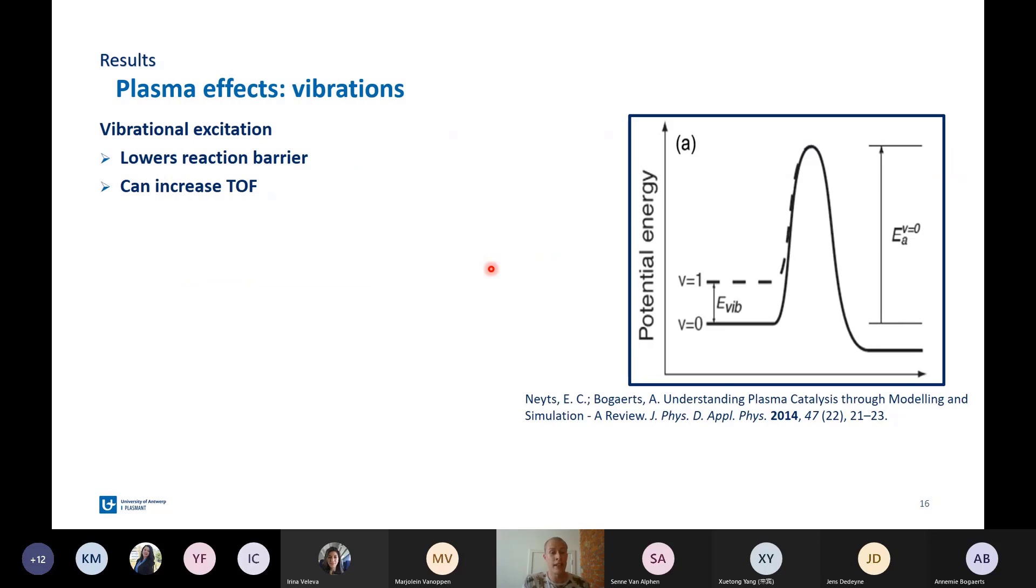Next, we looked at the effect of vibrationally excited species. As you can see here on the slide, the vibrationally excited species have a lower barrier for certain reactions because they have a higher energy state, which means the lower barrier then makes the reaction rate go up, and this can increase the turnover frequency. But when we put this in the model for a typical CO2-H2-DBD plasma, we see that there is an effect, but the effect is very small compared to the effect of the radicals. For a typical DBD plasma, this effect will not be important.